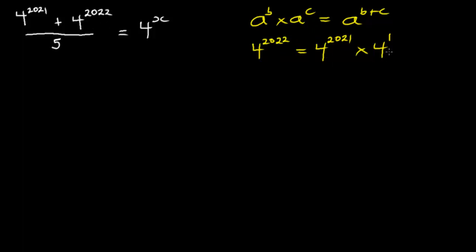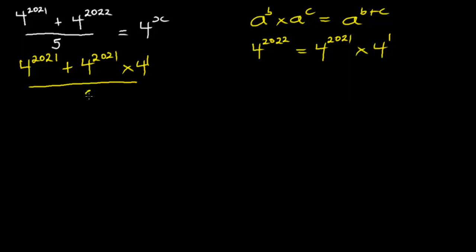So in place of four exponent 2022 we are going to write this over there. Now we have four exponent 2021 plus four exponent 2021 multiplying four exponent one, and this is equal to four exponent X.